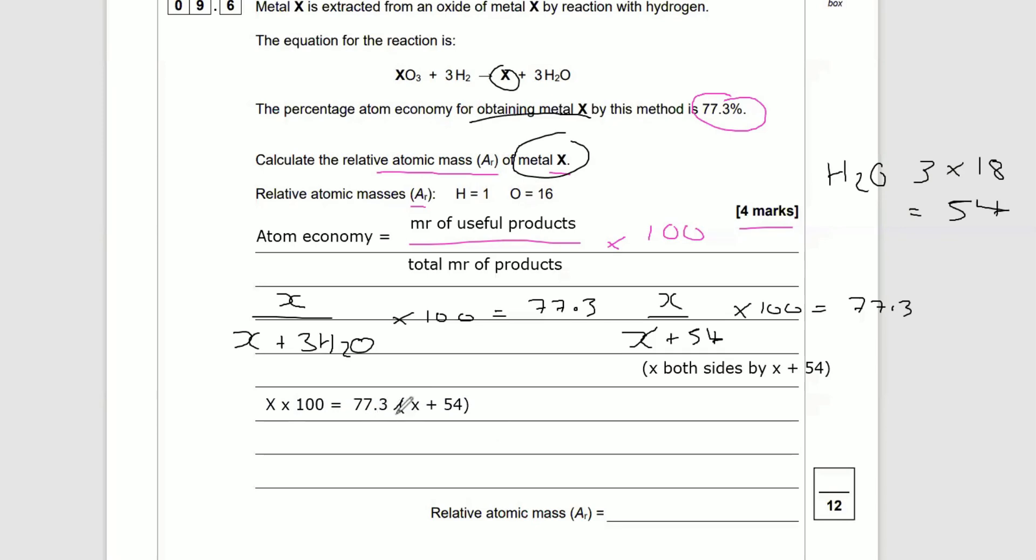Let's just do 100X is equal to 77.3X plus... got to do 77.3 times 54. What the hell does that equal? I can't do that one in my head. I know some of you countdown experts can.